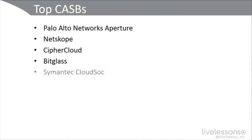Features include single sign-on, anti-phishing, and identity management. There's Bitglass, Symantec Cloud SOC, Oracle Cloud, and Cloud Codes — another CASB that provides single sign-on identity management, anti-phishing, and adaptive access control. We will revisit the topic of CASBs in greater detail in lesson 13.4.